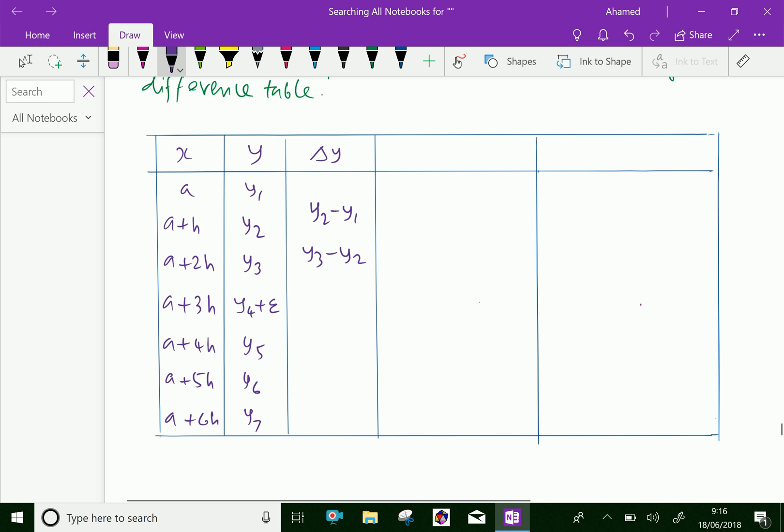Therefore, y4 plus e minus y3. Next is y5 minus y4 minus e. Then y6 minus y5. Then y7 minus y6. This is the first difference we filled.